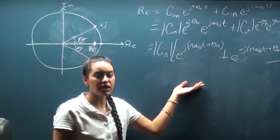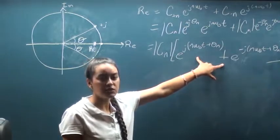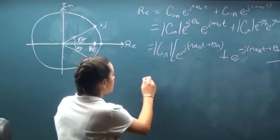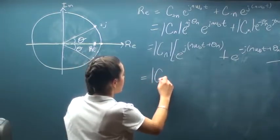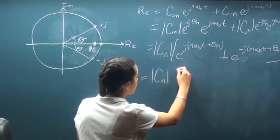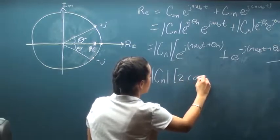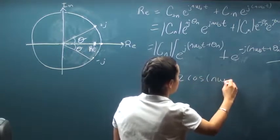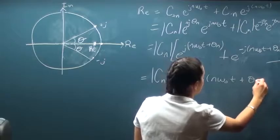Now we can use Euler's formula one more time to convert these two exponents into a cosine. So we're going to end up getting the magnitude of cn times 2 cosine n omega naught t plus theta n.